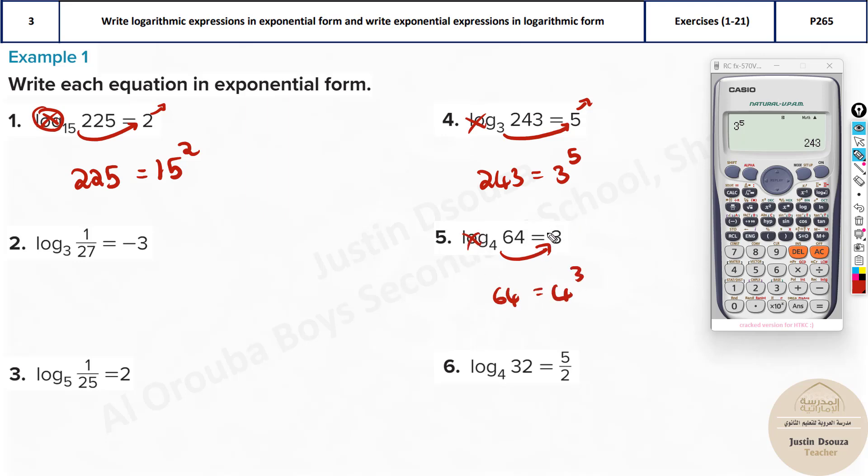4 goes to the other side and it'll become 64. This log cancels equals 4 to the power of 3. It's not 3 to the power of 4. This base, log base, becomes base of exponential. Now, you can see 4 times 4 is 16. 16 times 4 is 64. Yes, this is correct. Same thing over here.